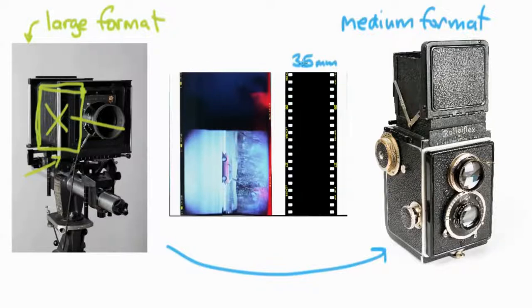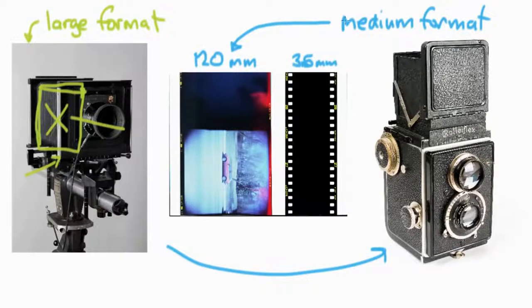Right here you've got 120 millimeter film, and a medium format is generally around 120 millimeters. There are some other sizes, but 120 is a pretty standard medium format size. You can see this camera is also a TLR, but we'll talk about what that is in a second.